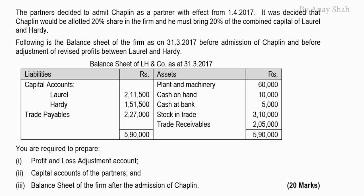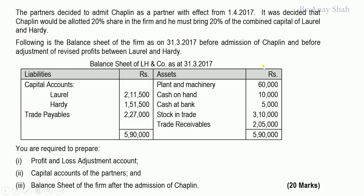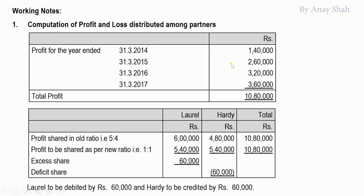For other adjustments: the 4 years' profit that was distributed in the ratio 5:4 needs to be changed to equal. Working note: total of 4 years' profit = 10,80,000. Dividing 10,80,000 in ratio 5:4 gives L = 6,00,000 and H = 4,80,000. Now dividing equally gives L = 5,40,000 and H = 5,40,000, total = 10,80,000.